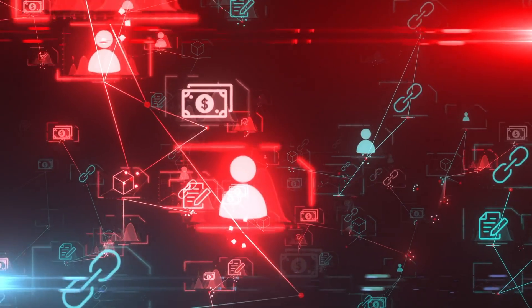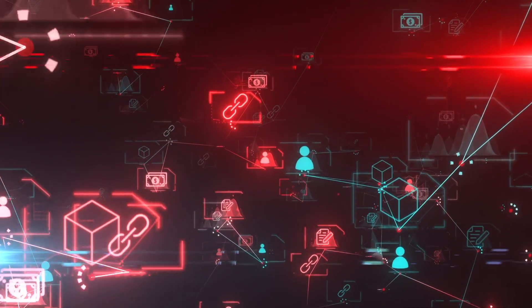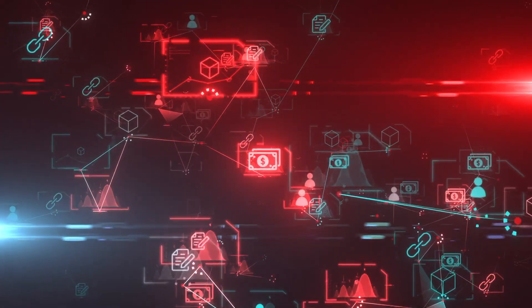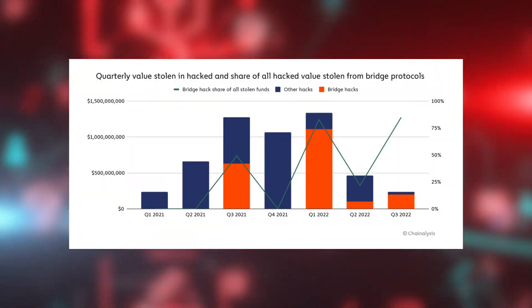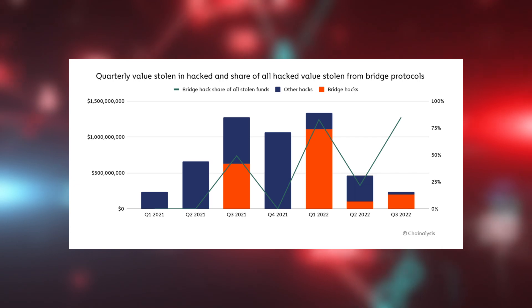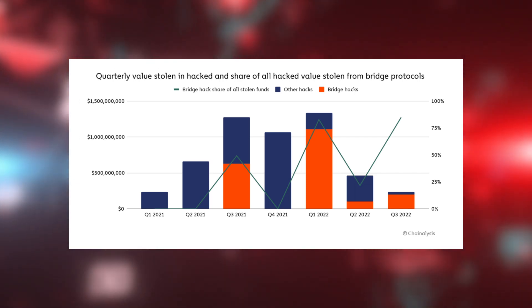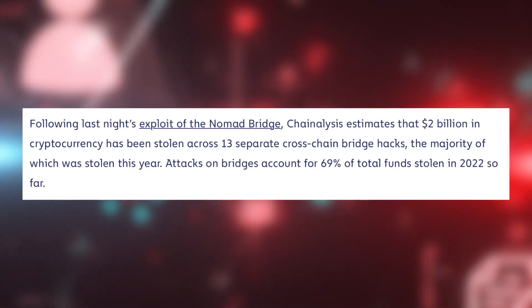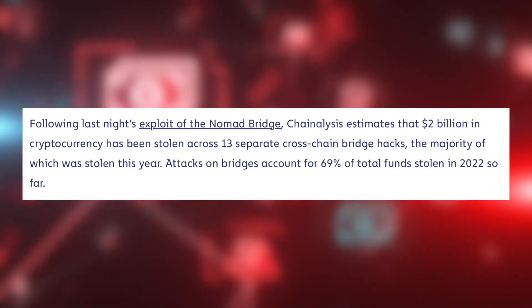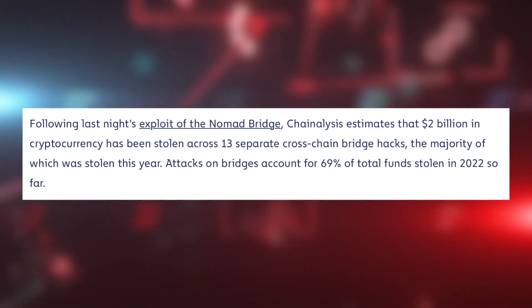With exchanges like FTX imploding and misusing customer assets, who knows what these exchanges are doing with your crypto. And second, you can use a cross-chain bridge such as Multichain or Wormhole. But cross-chain bridges are some of the most dangerous platforms in all of crypto. Hackers have stolen over 2 billion dollars from cross-chain bridges in 2022 alone. That accounts for 69% of all stolen crypto funds this year.